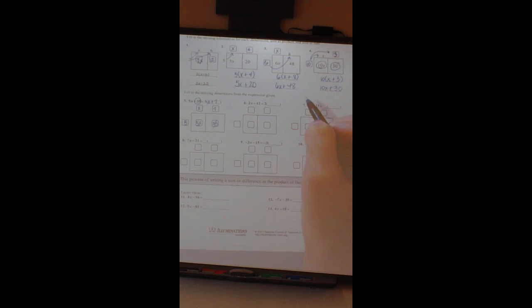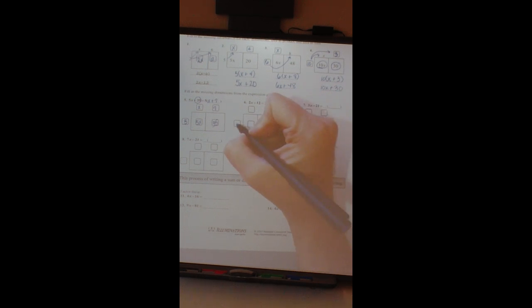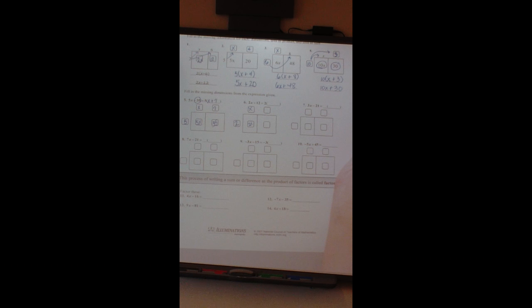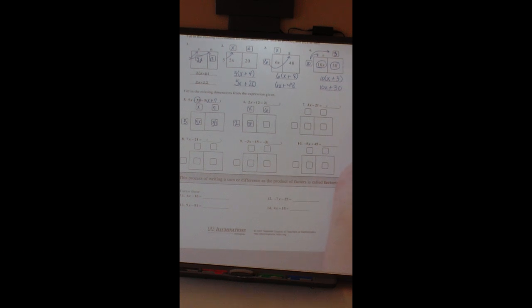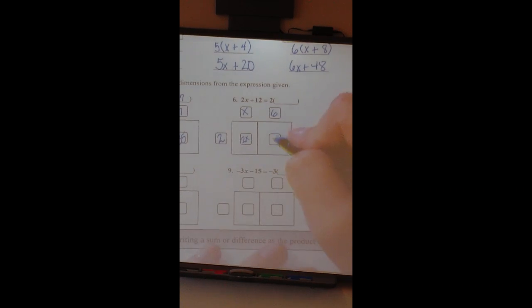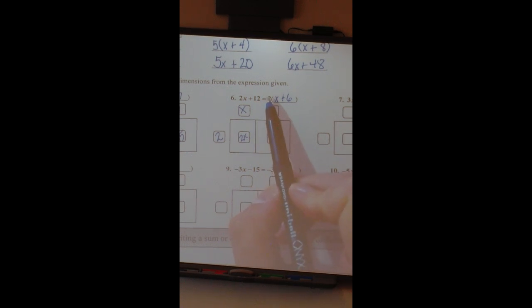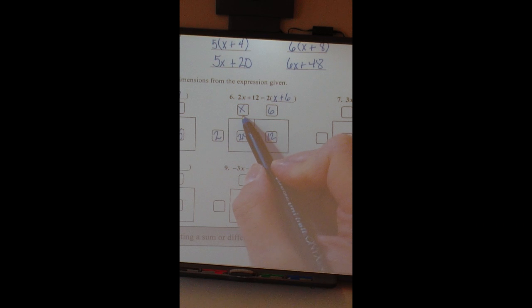All right, who wants to answer number 6? This one? So what goes in this box? All right, what goes up here, my friend, please? x plus 6. Good. So we saw this 2x plus 12, and we said, well, how did we get 2x plus 12? Well, we must have said 2 times x, and then how do we get this 12? Well, 2 times 6 is 12.